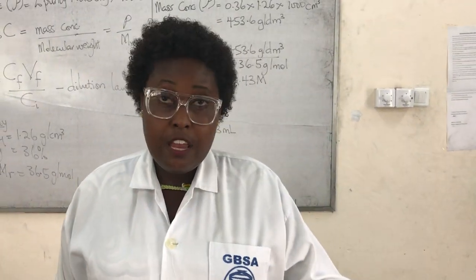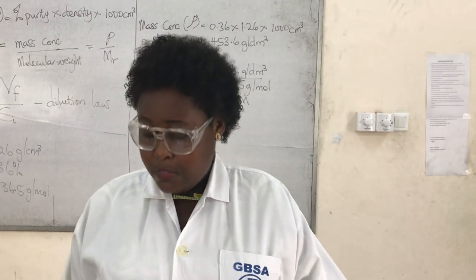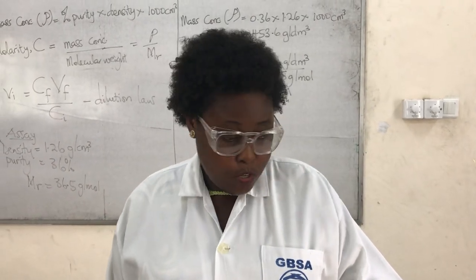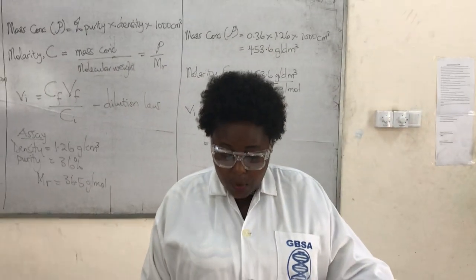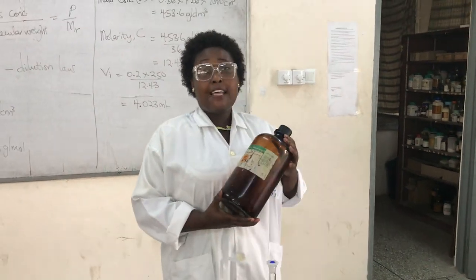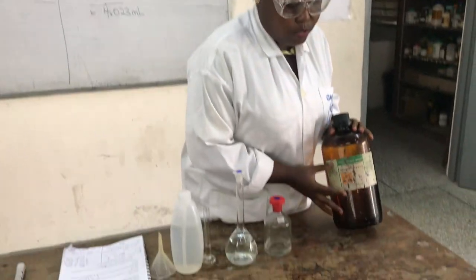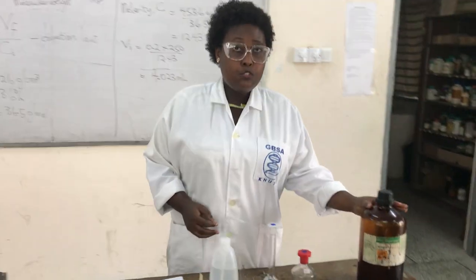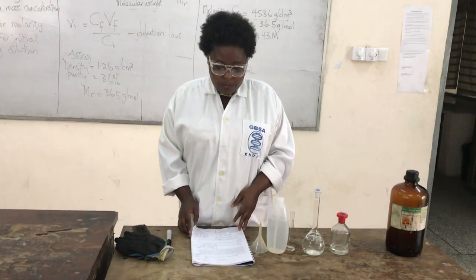Note that this HCl bottle is different from the question I read — from the bottle the specific gravity is 1.18, but from what I read it is 1.26. I brought this bottle here for demonstration purposes to show you how to find the assay on a winchester bottle. We are using the values from the book, not from this bottle.